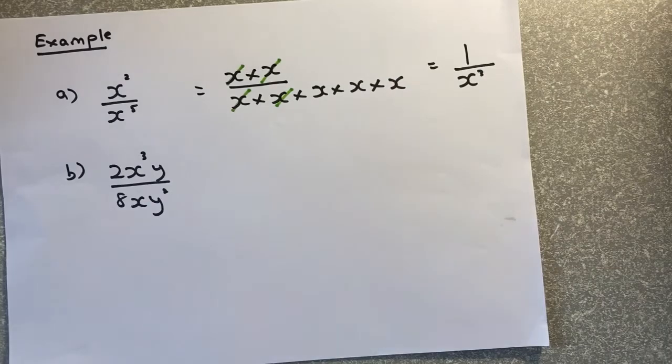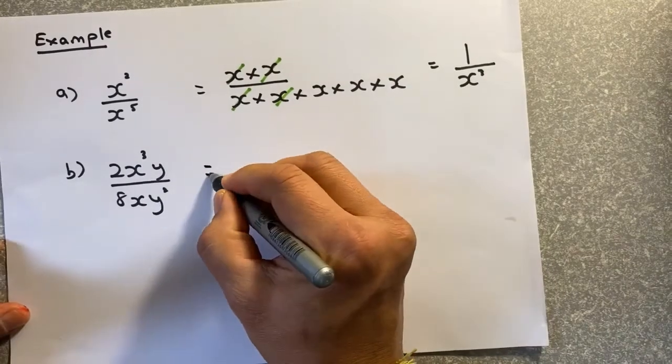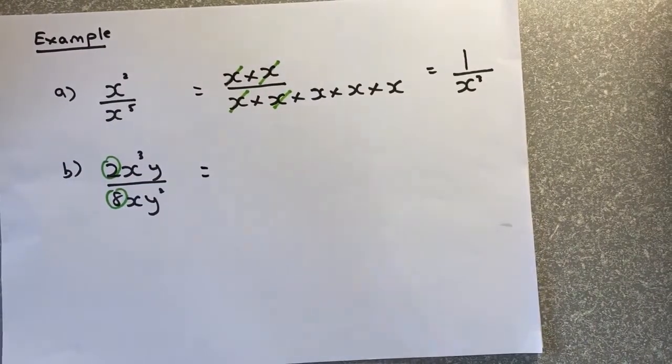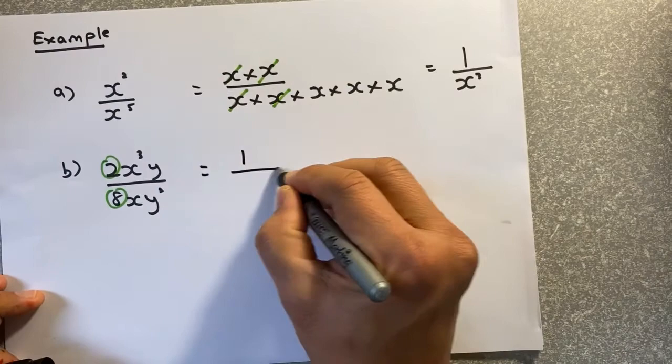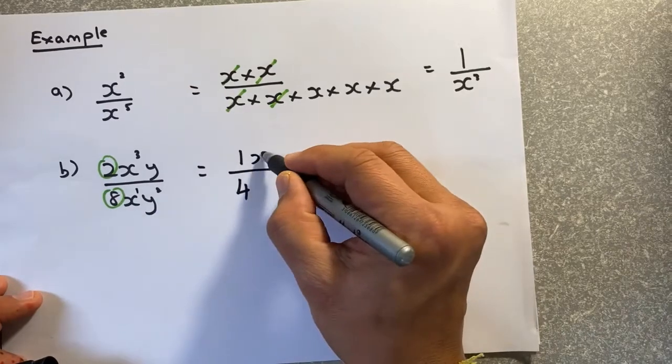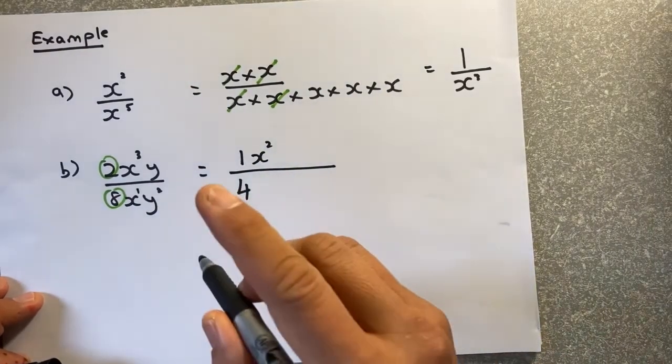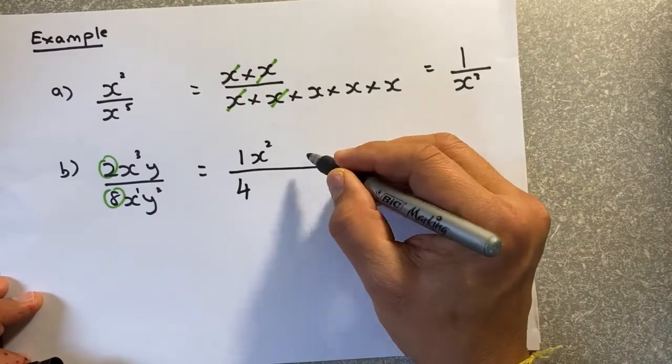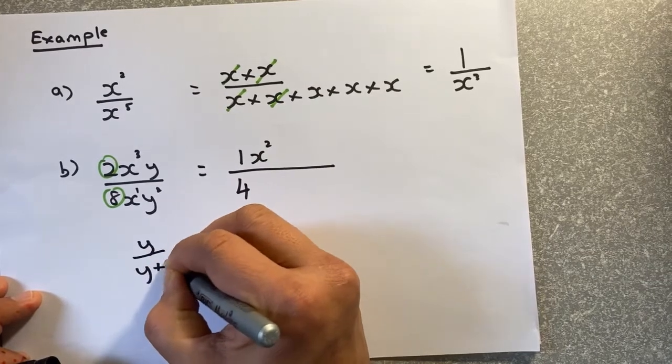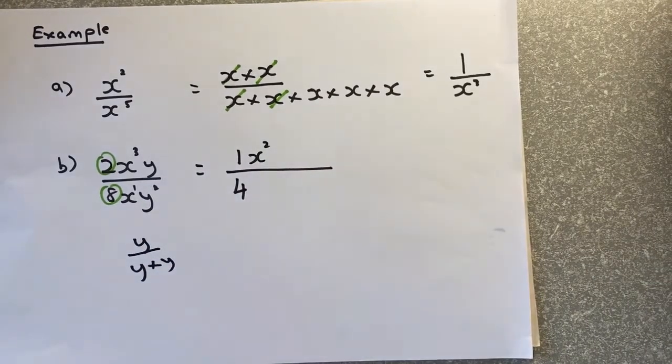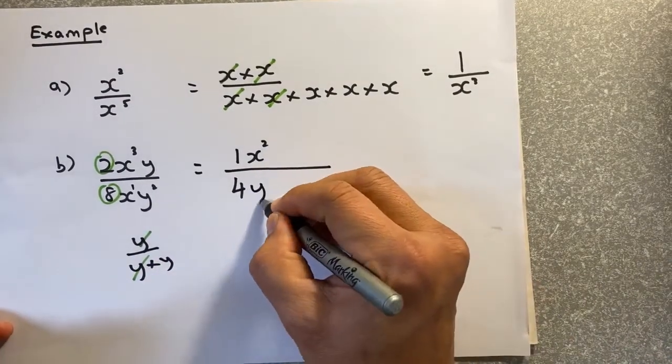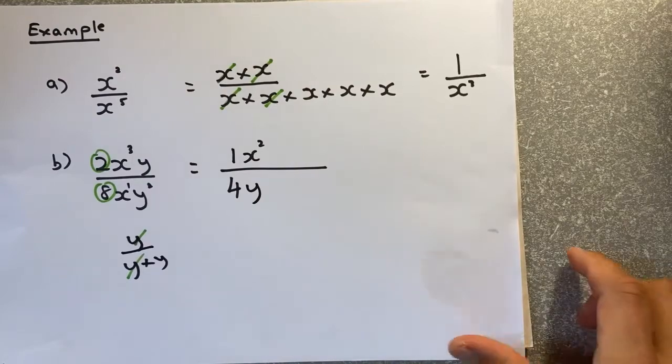And now, we shall look at the harder example. The same thing. 2 divided by 8. You put in your calculator or you should know this by now. 2 over 8 is the same as 1 over 4. x cubed and x. So you can minus 3 minus 1, they're going to be x squared on the top. Look at the bottom. y and y squared. So there are 2 y's. 1 y on top and 2 y's at the bottom. So y and y times y. So what do you do? You cancel them out. y and y will cancel them out. So you have 1 y at the bottom.